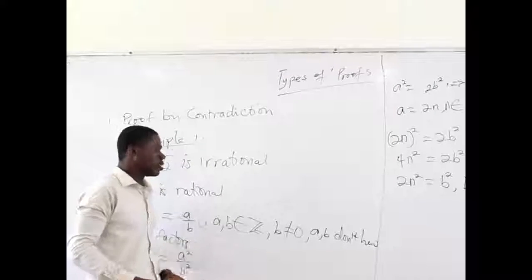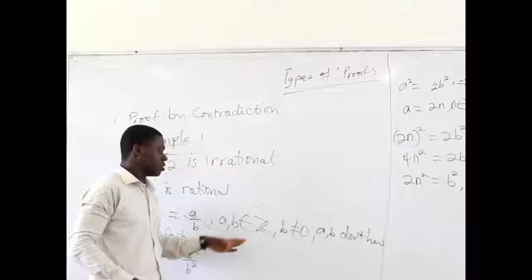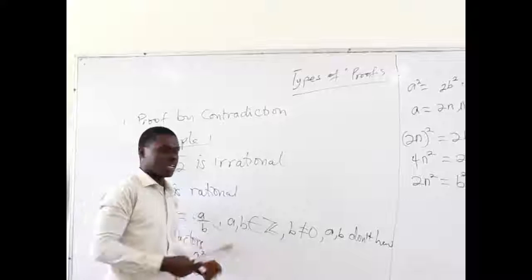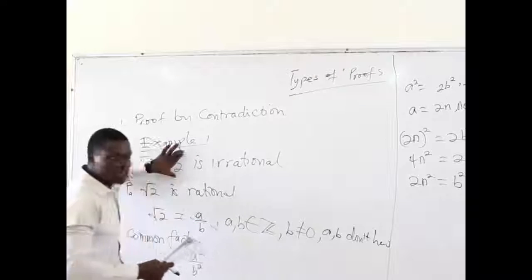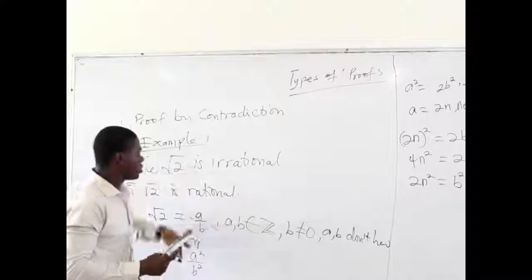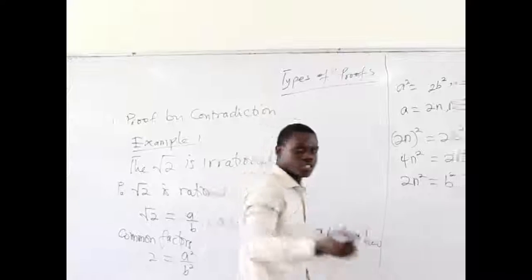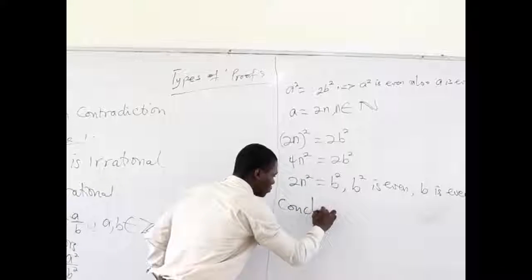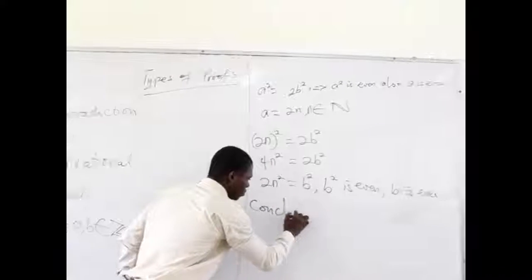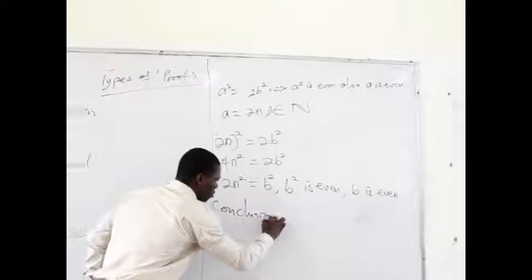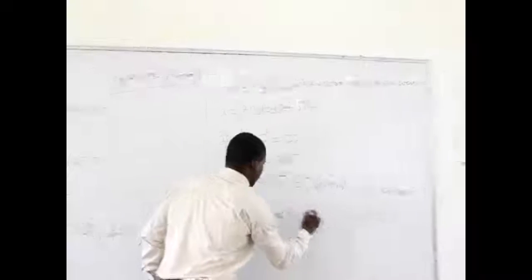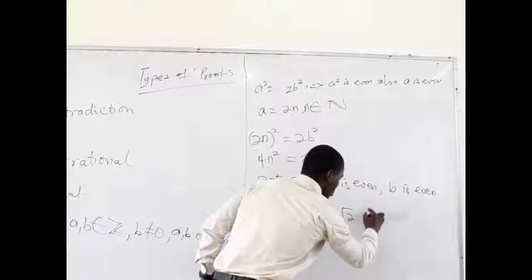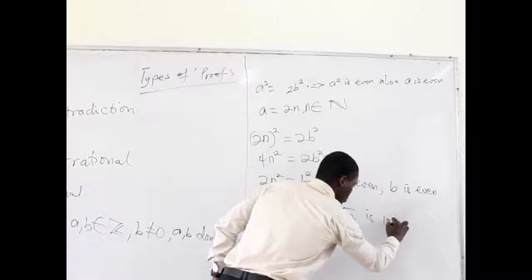At the end, we have shown that they are both even, for which reason they are going to have common factors. Meanwhile, we stated that they don't have common factors. So these two issues contradict. Therefore, we conclude that the root of 2 is irrational.